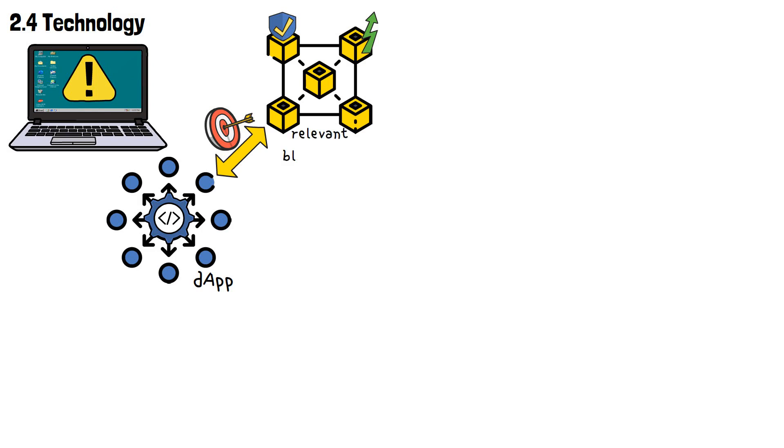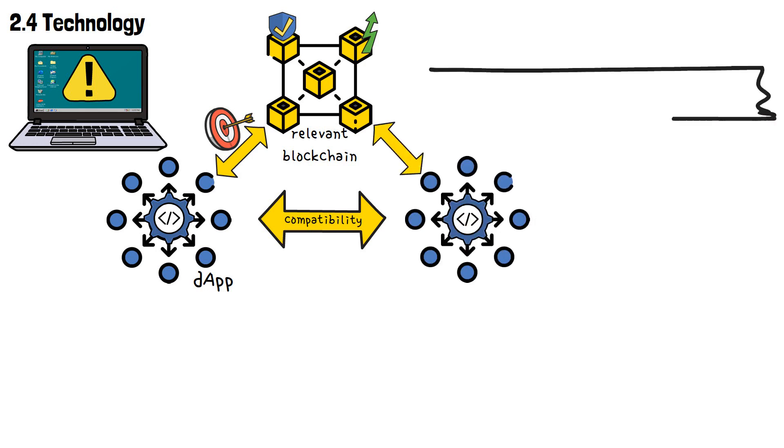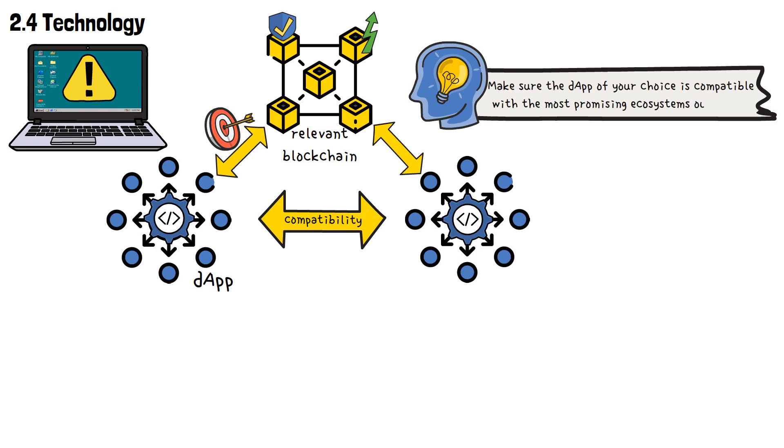Choosing a dApp that is built on a relevant blockchain network ensures compatibility and interoperability with other dApps and services on the same network. To translate this into down-to-earth language, you can say that you have to make sure the dApp of your choice is actually compatible with the most vibrant, buzzing and promising ecosystems out there.